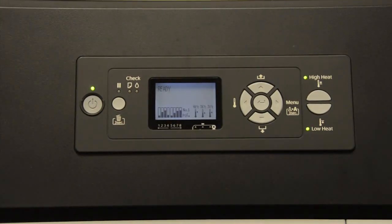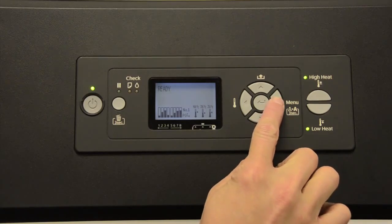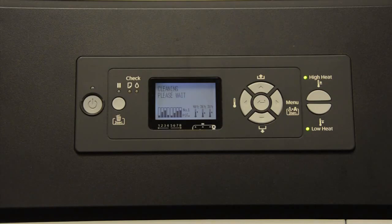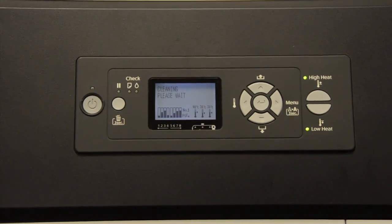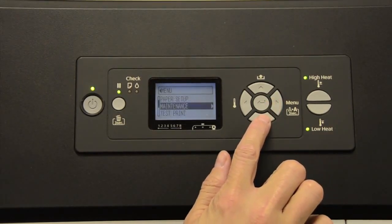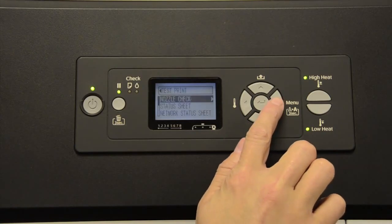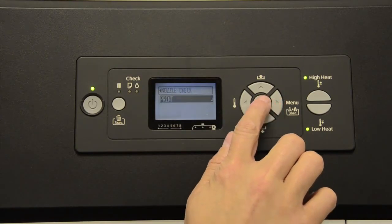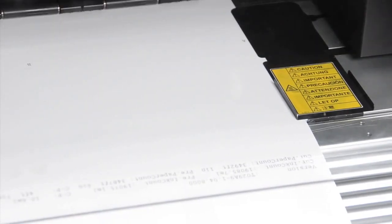When the GS6000 is back in ready mode, it is a good idea to run a cleaning cycle. Simply by holding down the menu button for three seconds, this will initiate a cleaning cycle. Once the GS6000 completes the cleaning cycle, we will run a nozzle check. If we navigate down to test print, into nozzle check, and then hit OK to print, this will now print a GS6000 nozzle check pattern for both heads.